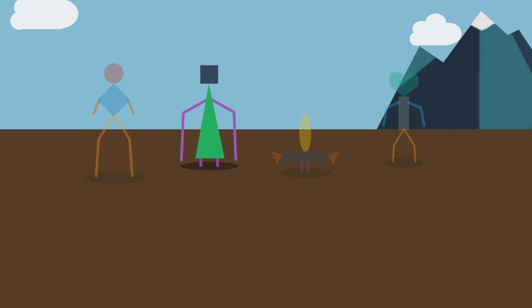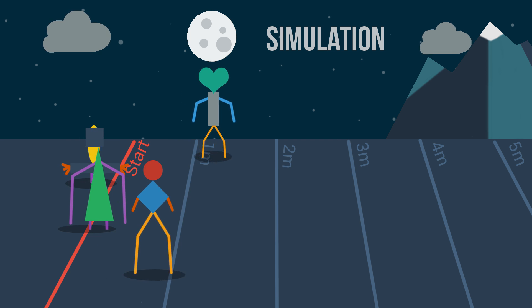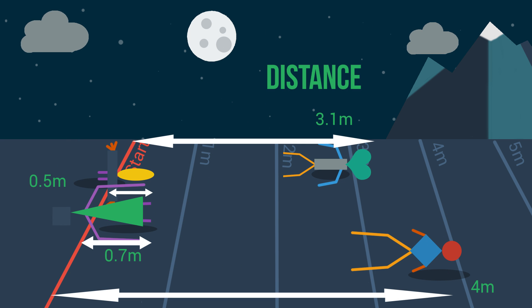First, an initial population is randomly generated. Each individual has its own characteristics. We make the creatures walk and calculate the distance traveled for each of them.